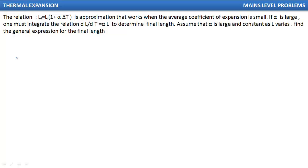This equation is an approximation that works when the average coefficient of expansion is small. If alpha is large, one must integrate the relation dL/dt equals alpha·L to determine the final length. Assume that alpha is large and constant as L varies — find the general expression for the final length.